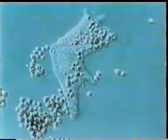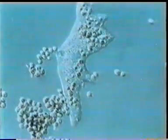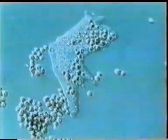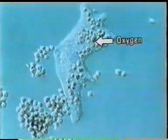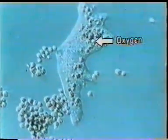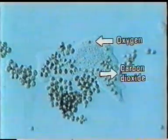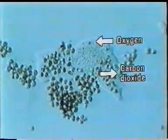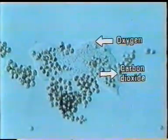In small organisms like this one-celled animal that lives in fresh water, the whole body surface is in contact with its surroundings. Oxygen that is dissolved in the water enters the animal's body by simple diffusion. And carbon dioxide produced by this animal is got rid of into the surrounding water in the same manner.